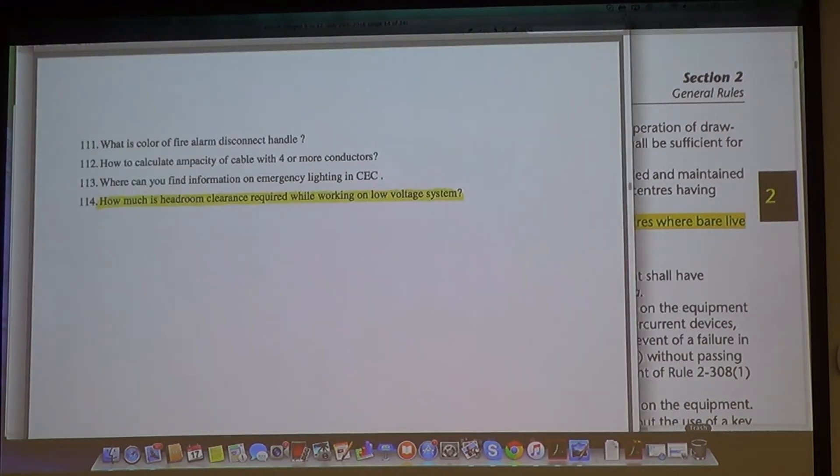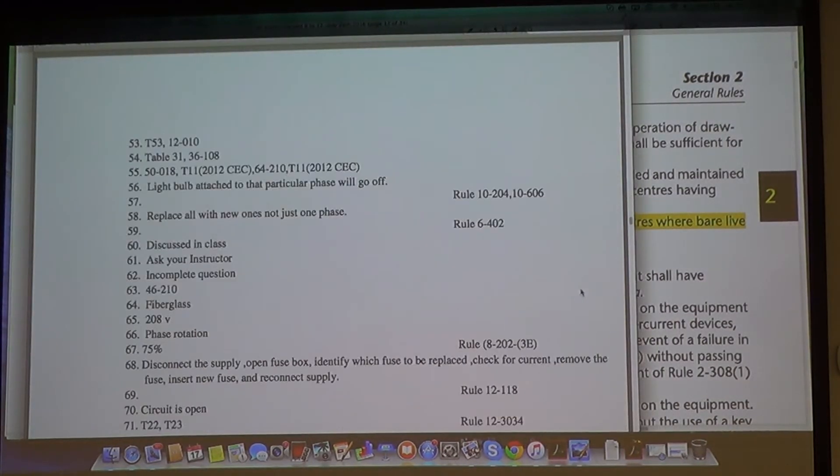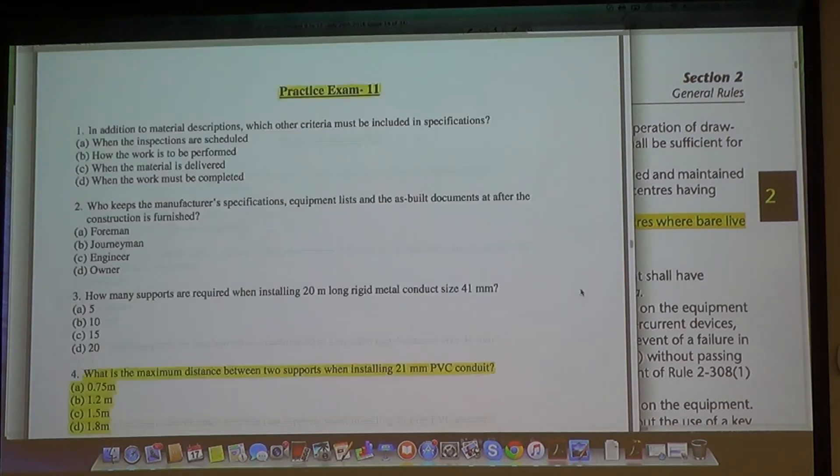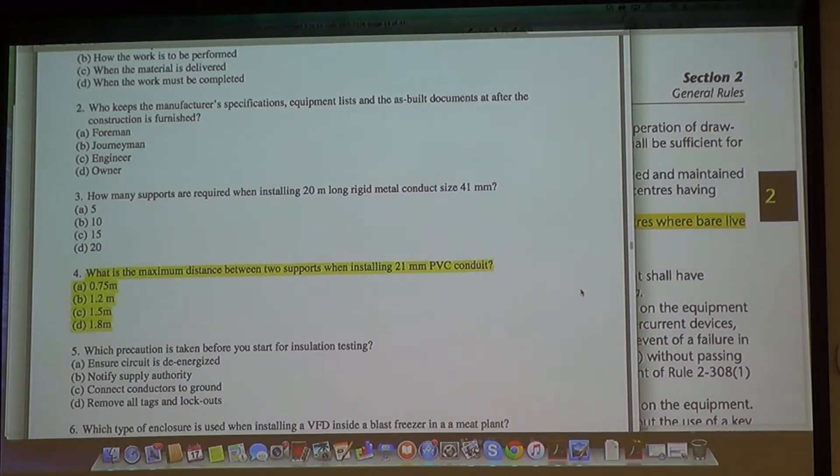Next one after that, on exam 11, is question number 4. Reese, what is the maximum distance between two supports when installing a 21 mm PVC conduit? 2.15 meters, which is 750 mm. Very good job.